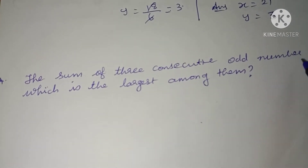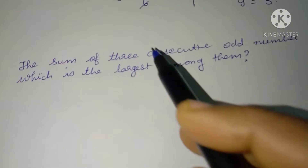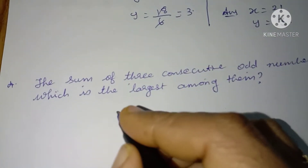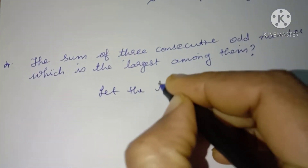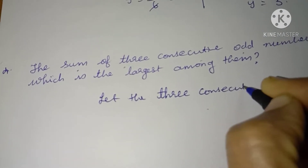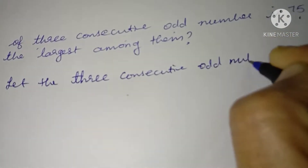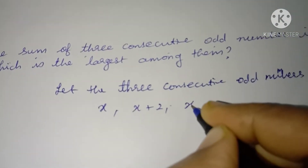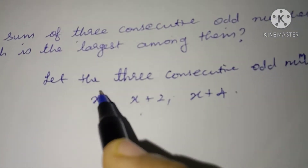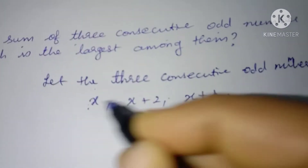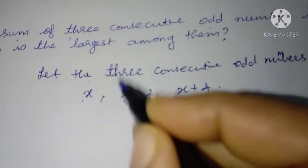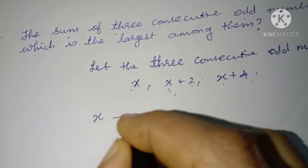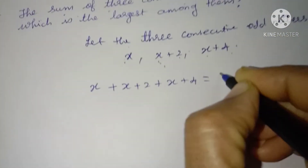Next question: the sum of 3 consecutive odd numbers is 75. Consecutive numbers means continuous numbers. Let the 3 consecutive odd numbers be x, x plus 2, and x plus 4. For example, if x is 1, the next odd number is 1 plus 2 is 3, and the next is 1 plus 4 is 5. Sum means you have to add. Therefore, x plus x plus 2 plus x plus 4 equals 75.